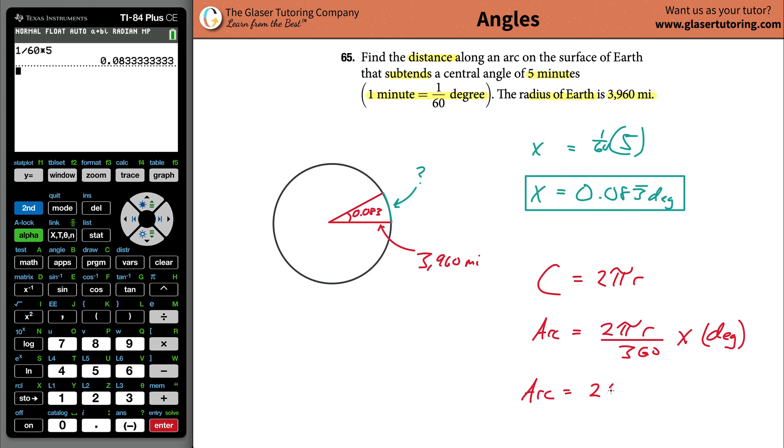So your arc length here will be 2 pi, multiplied by the radius of 3,960 miles, divided by then 360, times then your degrees of 0.083, whatever the degrees of the angle that it was subtended by. Don't even know if I'm really using that right. I just love the word subtended. Subtended. Anyway, I'm getting distracted.